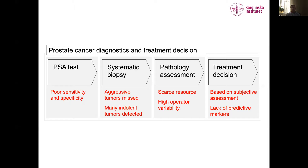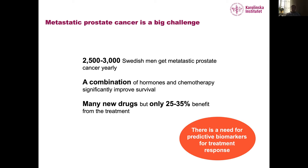The fourth topic is treatment selection for prostate cancer, particularly metastatic prostate cancer. About 2,500 to 3,000 Swedish men are diagnosed with metastatic prostate cancer every year. Combinations of hormones and chemotherapy can improve survival, but we don't know which patients should receive which treatment — response rates are only about 20–40%, and these drugs are very expensive, leading to a costly trial-and-error process.